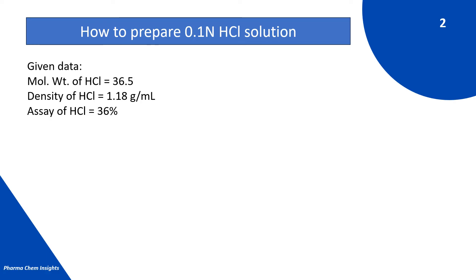All this data you can find on the bottle of concentrated HCl. Generally, we use 36% HCl in the lab.